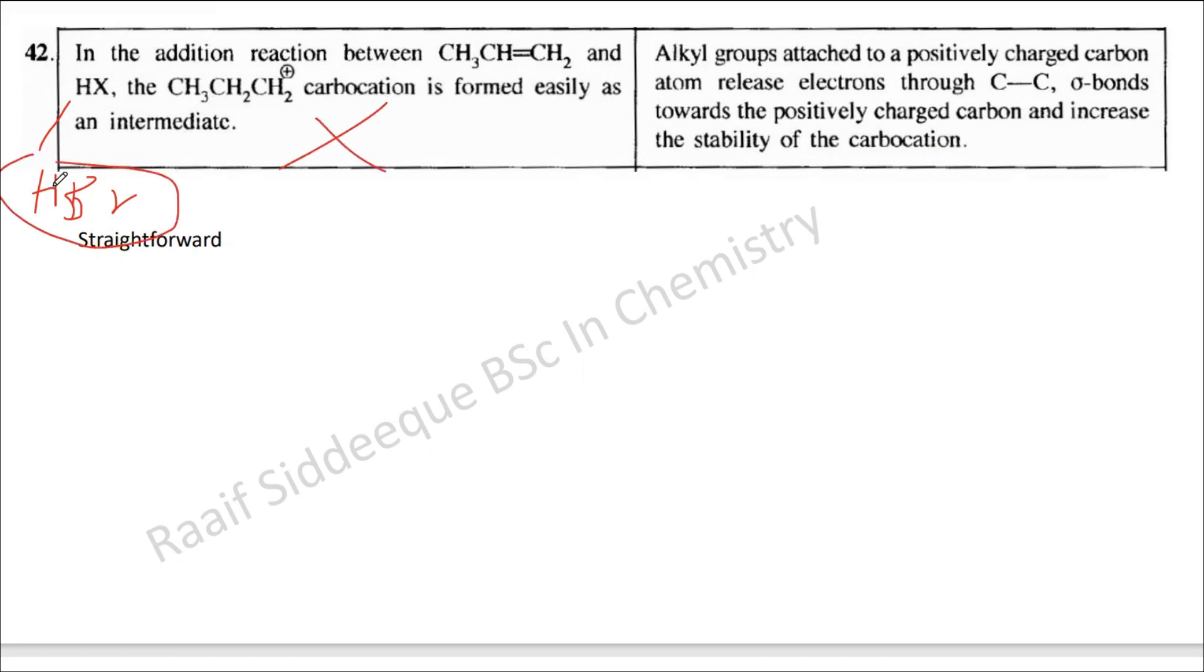According to Markovnikov's rule, the H+ should go towards the place where you have maximum hydrogen, so the carbocation that is formed here is CH3CH+CH3. So this is wrong.